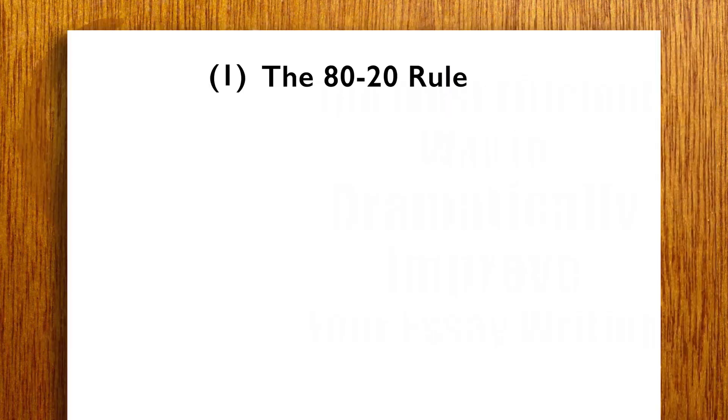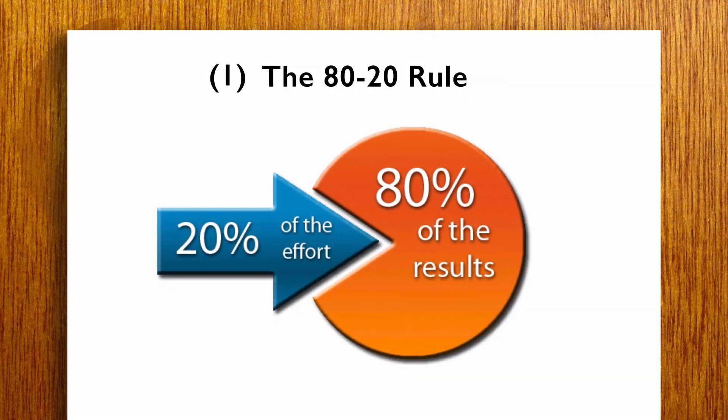There's a rule, known as the 80-20 rule, that originated in economics but is commonly taught in management and business. It states that, in many different situations, roughly 80% of the effects arise from 20% of the causes.